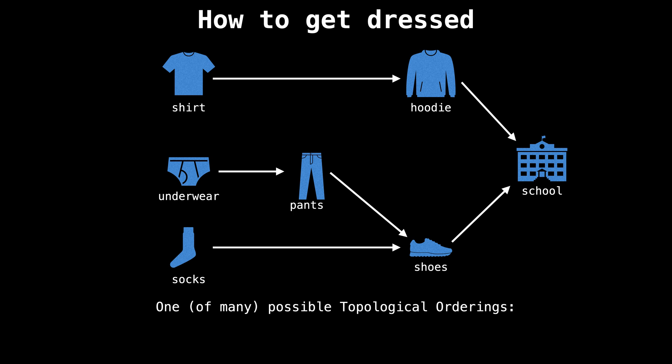Let's have a look at an example. Suppose you just woke up and you are trying to get dressed for school. There are six articles of clothing laying around your room: a shirt, a hoodie, some underwear, pants, socks, and shoes.